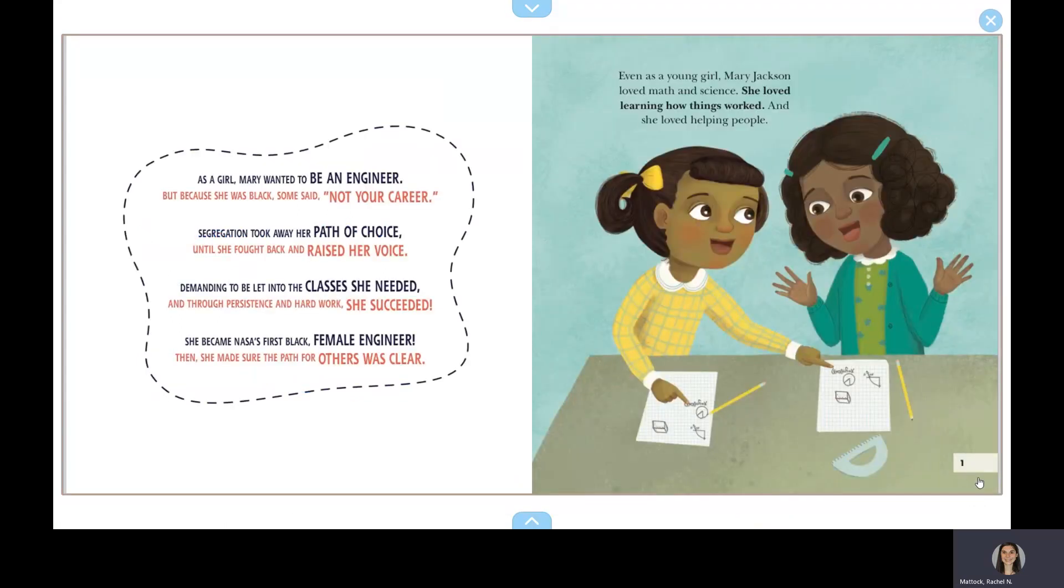As a girl, Mary wanted to be an engineer, but because she was Black, some said not your career. Segregation took away her path of choice until she thought back and raised her voice.